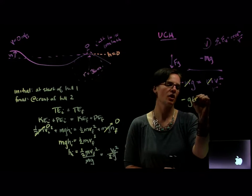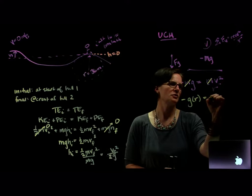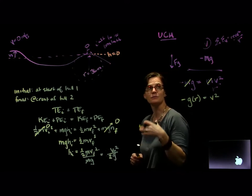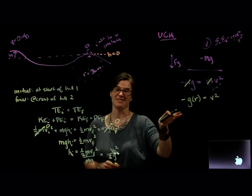Minus g times r is equal to v squared. Now if I'm going to take the square root, I have a problem with this negative. So we have to recognize what I missed in the process.